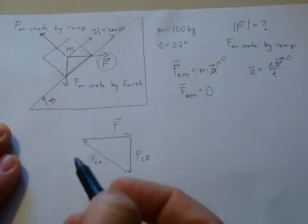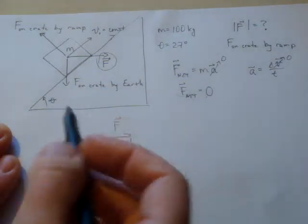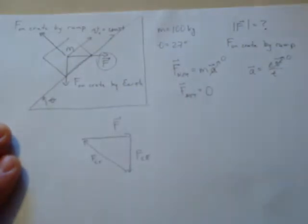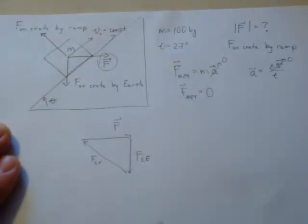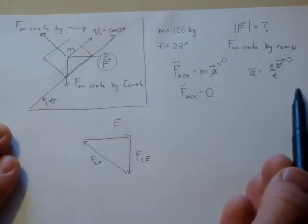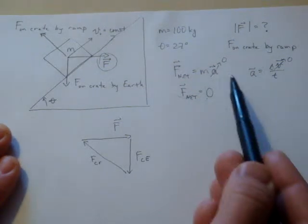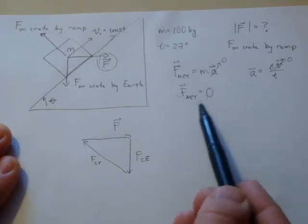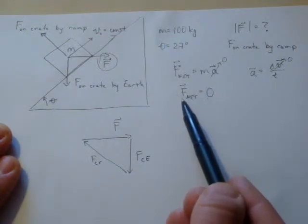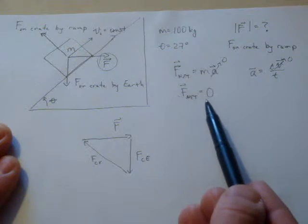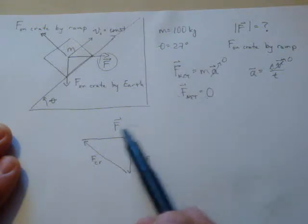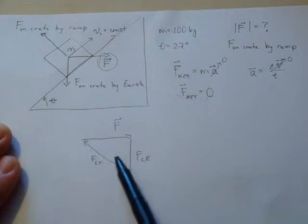We started off identifying what the different forces were acting on this particular crate, because we have the information that it's moving at constant velocity, therefore it is not accelerating, and that means the net force acting on this object is going to be equal to zero. So we identify all the forces, sum them all up, and graphically it looks like this.